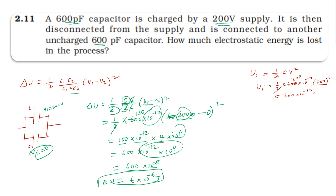Computing: 4 into 10 power 4 multiplied by 300 into 10 power minus 12 gives 12 into 10 power minus 6 Joule. This is 10 power minus 6 Joule. So the initial potential energy of the system is 12 into 10 power minus 6 Joules.